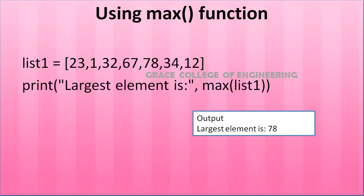Next, using the max() function. List 1 is created, then print the largest element using max(list1). max() is also a built-in function in Python. It will automatically do the operation and give the result. The output is: largest element is 78.